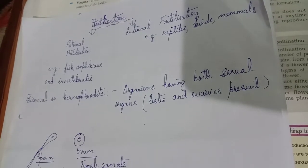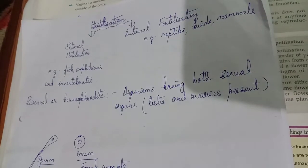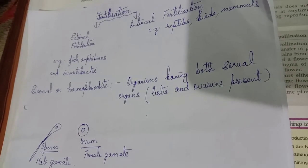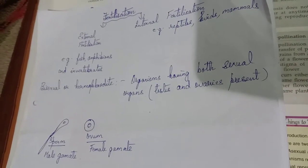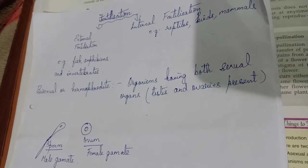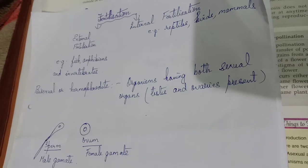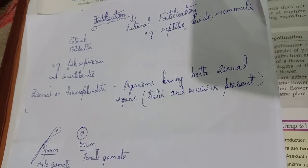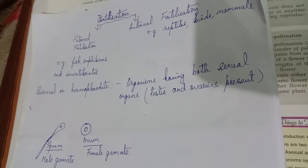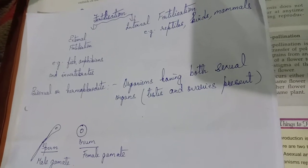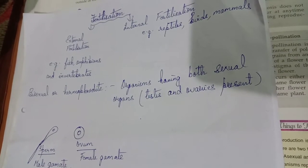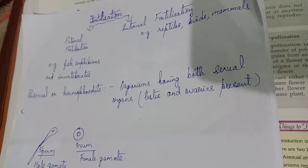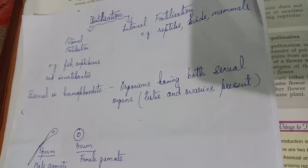There are certain animals in which both sexual organs are present — both testes and ovaries. Testes is the male sexual organ and ovaries is the female sexual organ. Such organisms are called bisexual or hermaphrodite. It is common in insects and animals of phylum Annelida, such as the earthworm. At the time of fertilization, two earthworms come in close contact — one acts as male releasing sperm and the other releases the ovum — and fusion takes place.